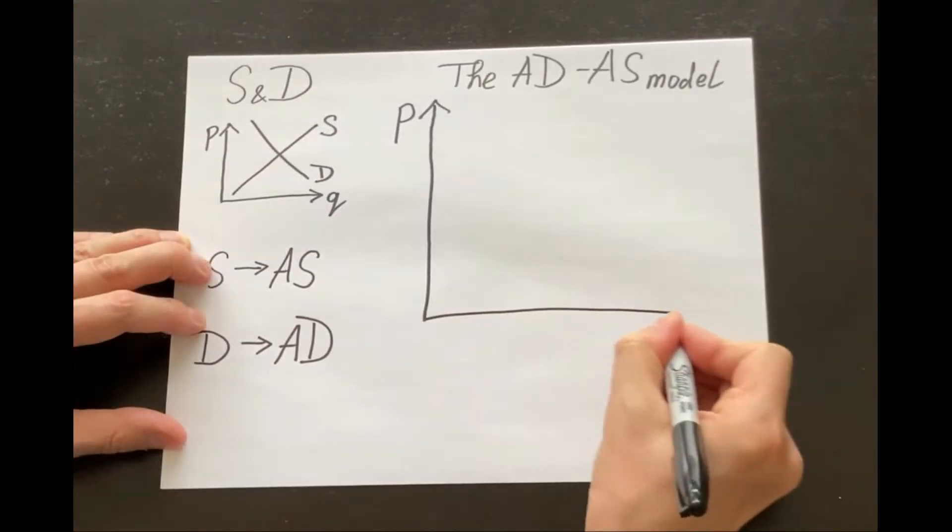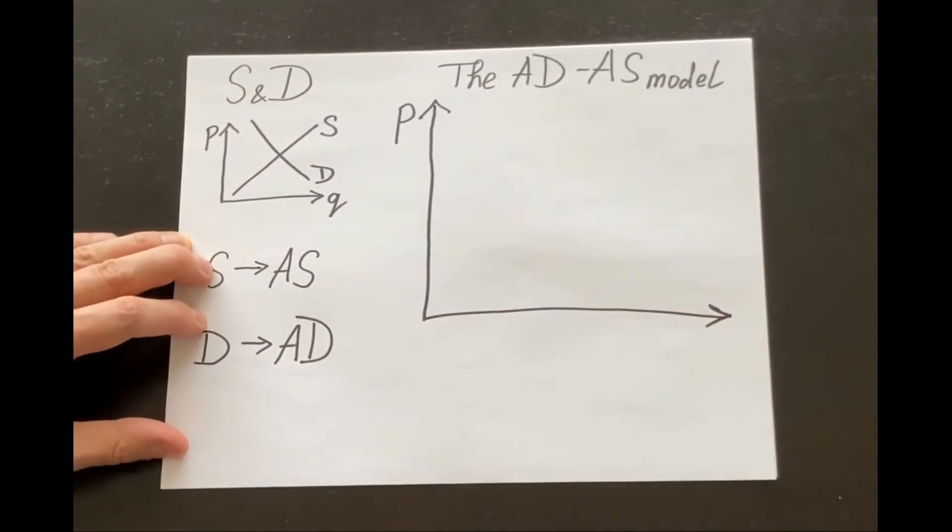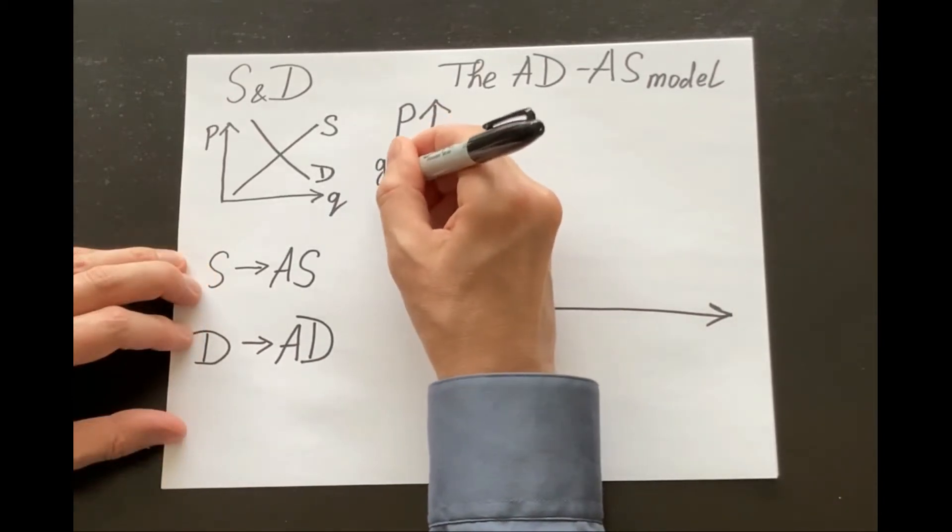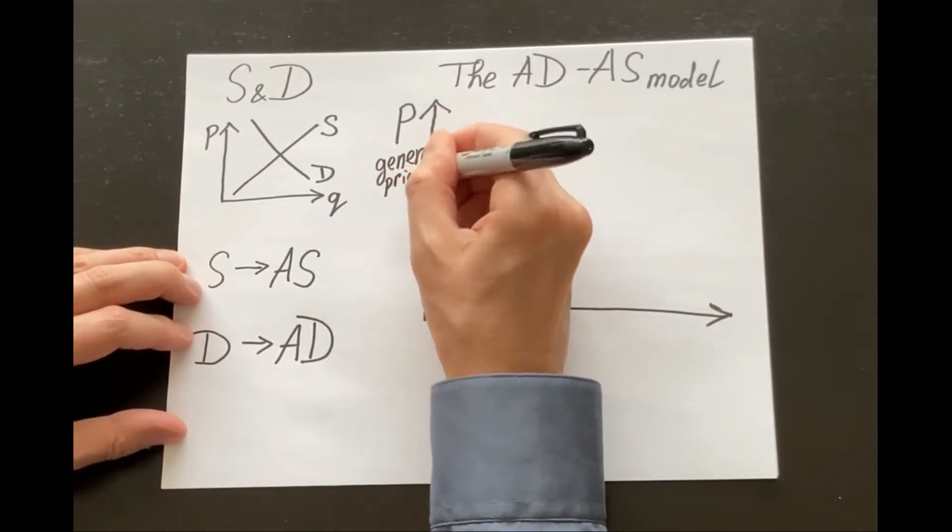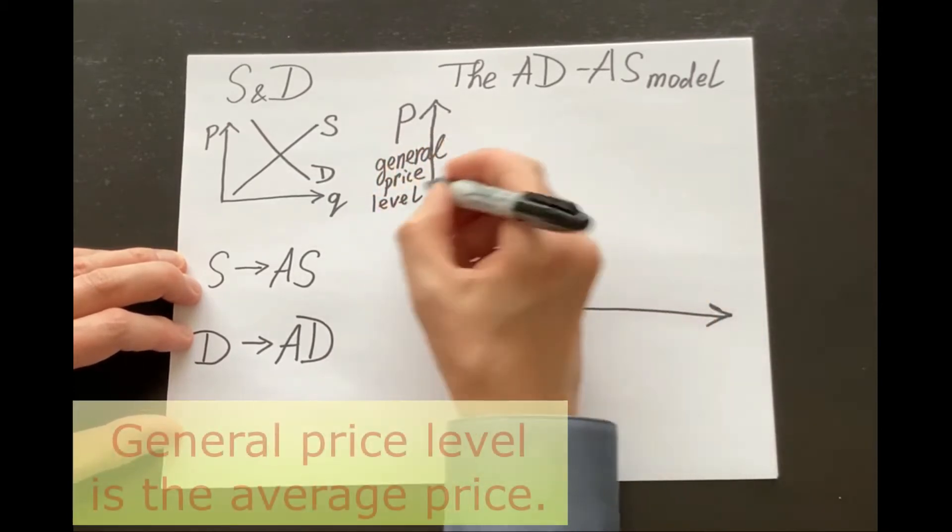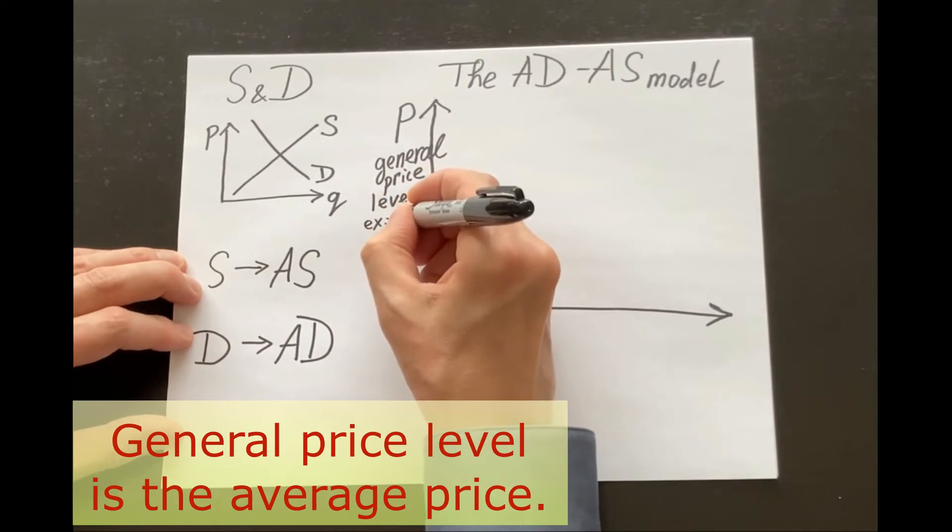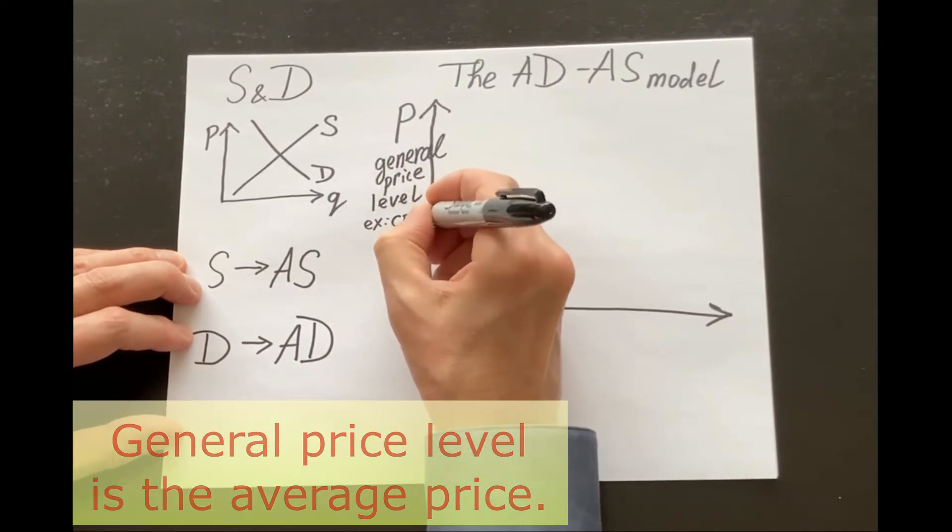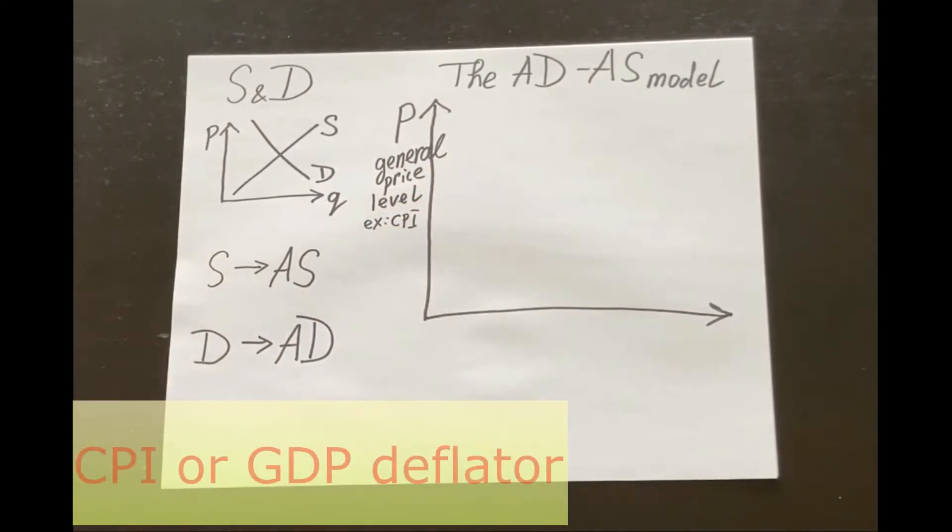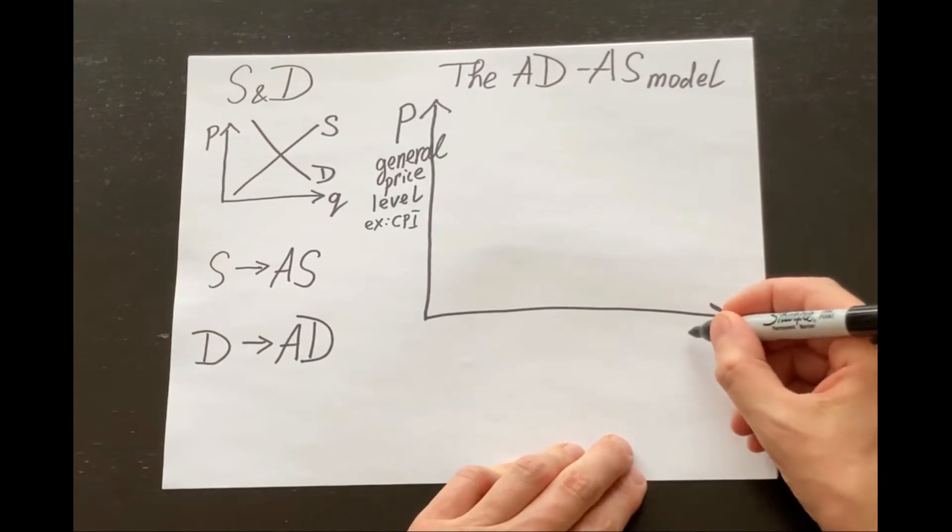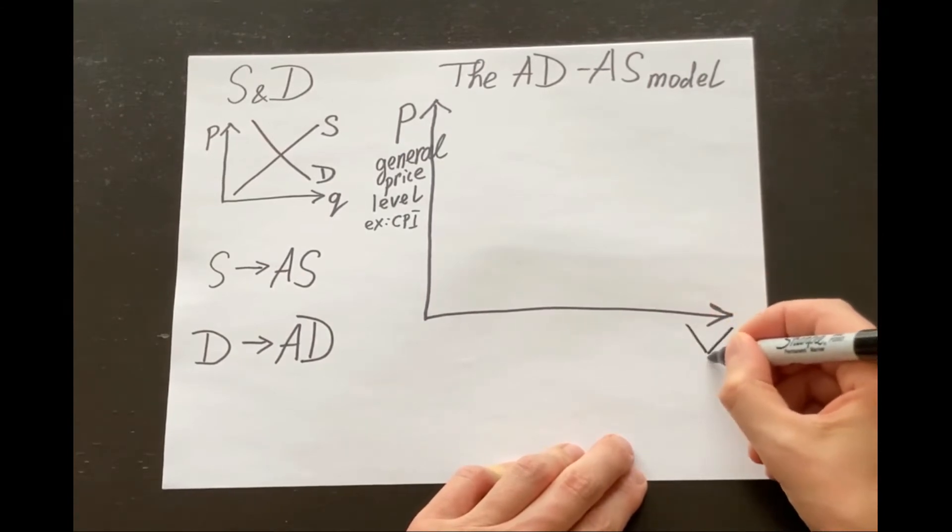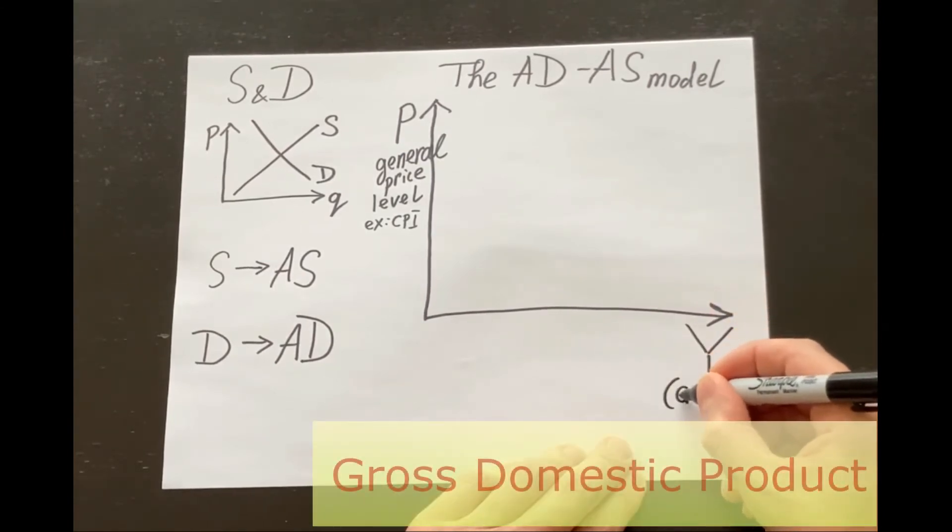The aggregate demand, aggregate supply model will look like this. On a vertical axis we put the price, the general price level. It's the average price for all goods and services produced in this country. For example, the CPI, the consumer price index, or the GDP deflator. And on a horizontal axis we put the gross domestic product, the GDP, denoted by the capital letter Y.